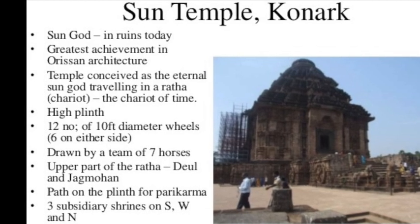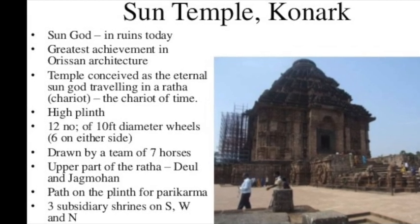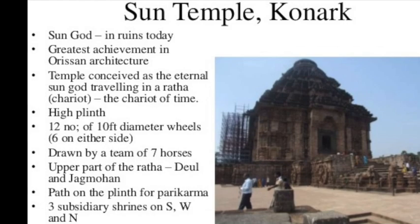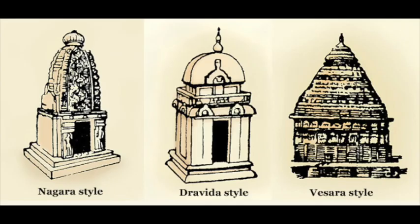The Sun God, in mythology, rides a chariot driven by seven horses, sculpted here at the entrance staircase.